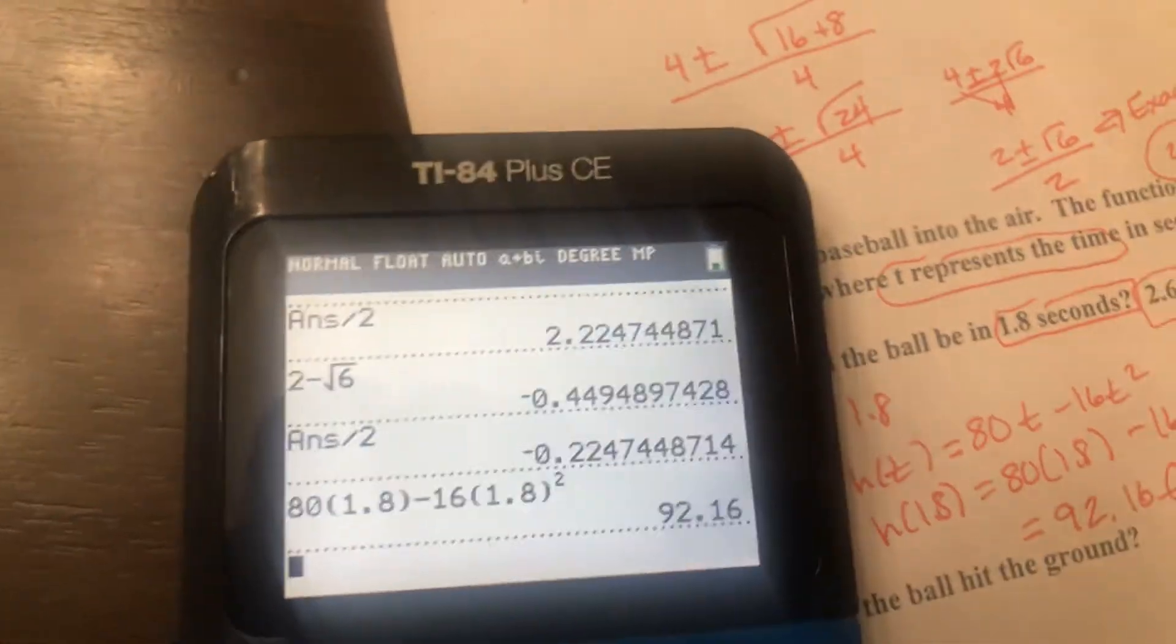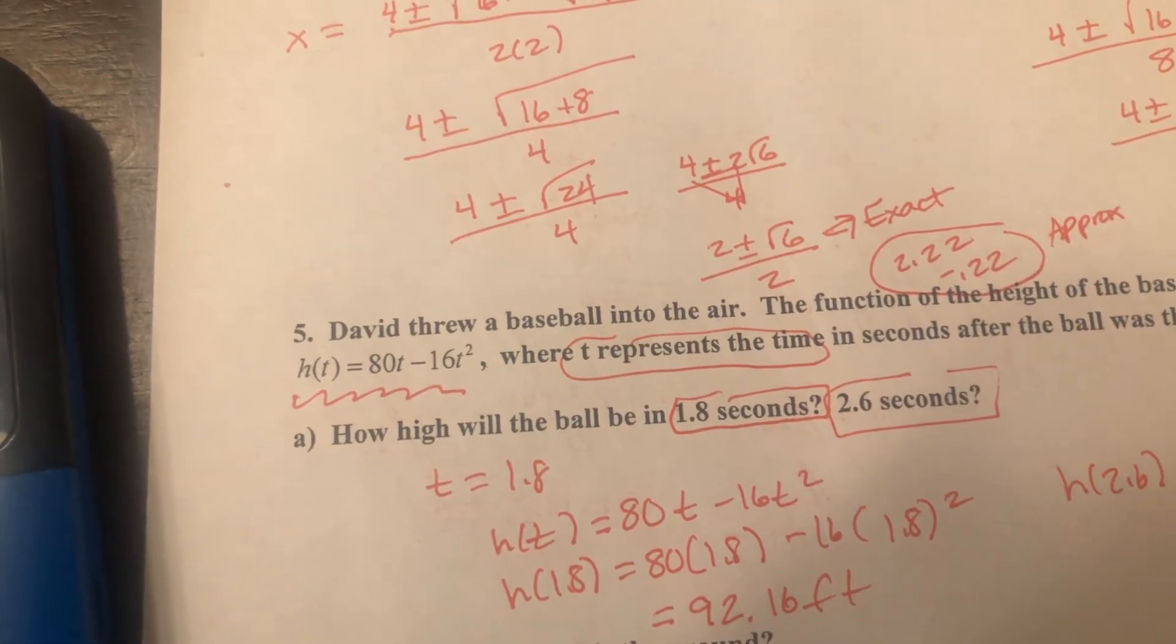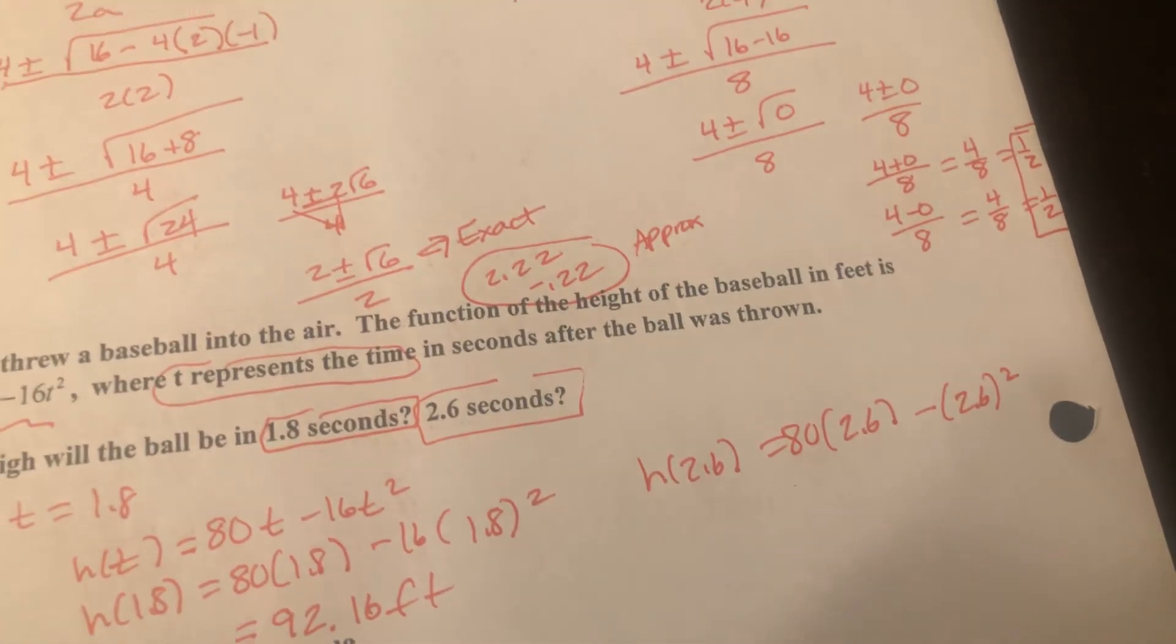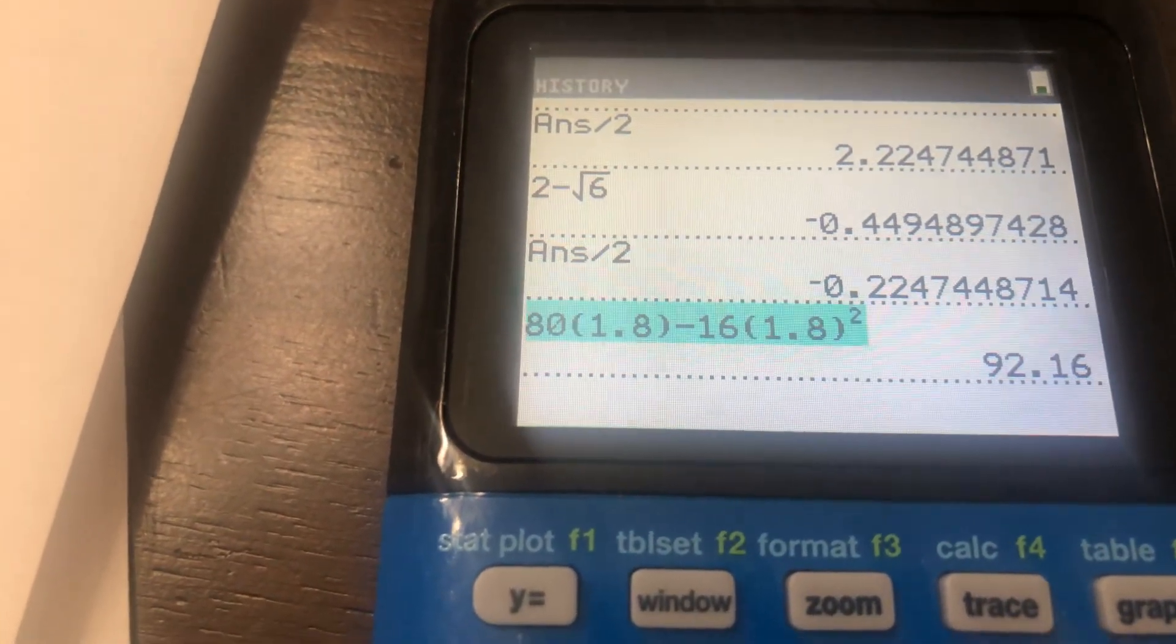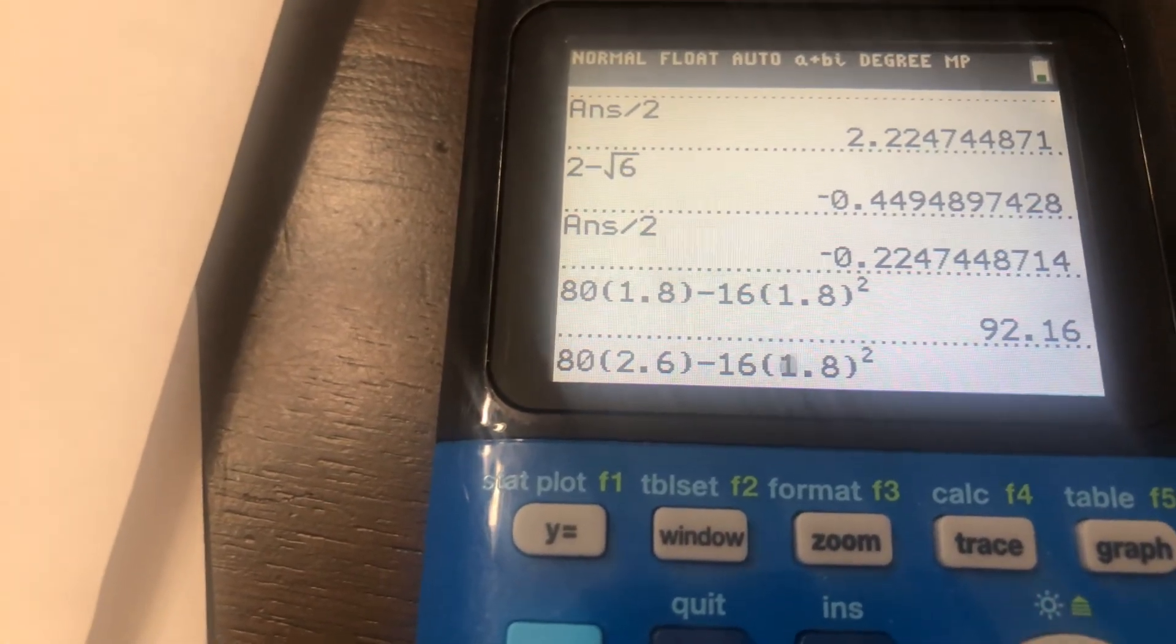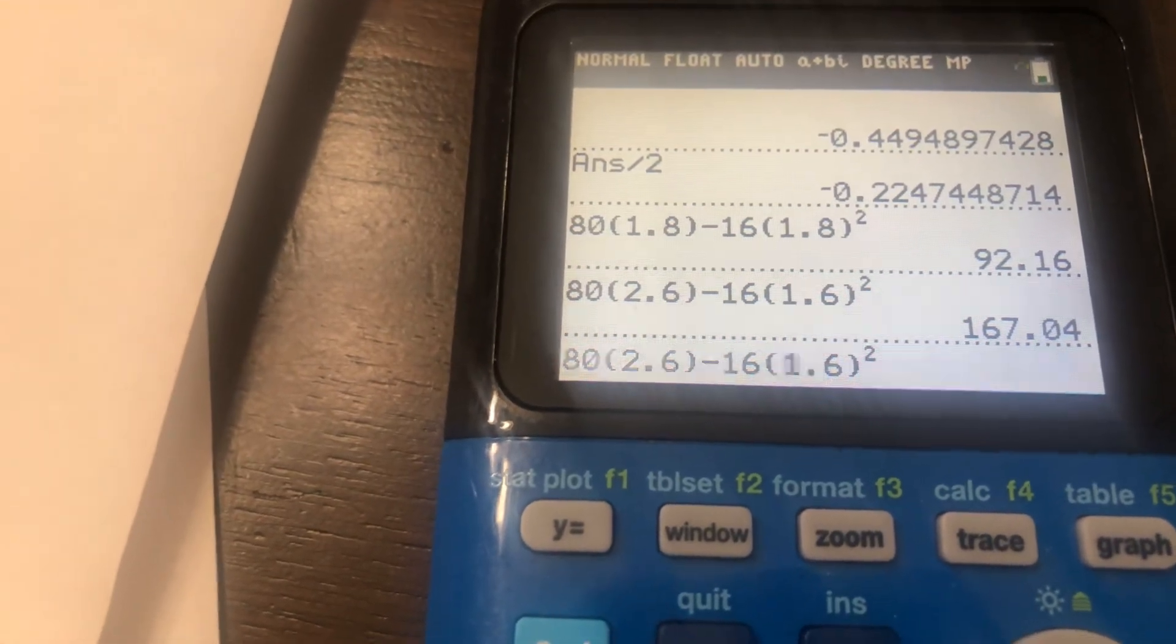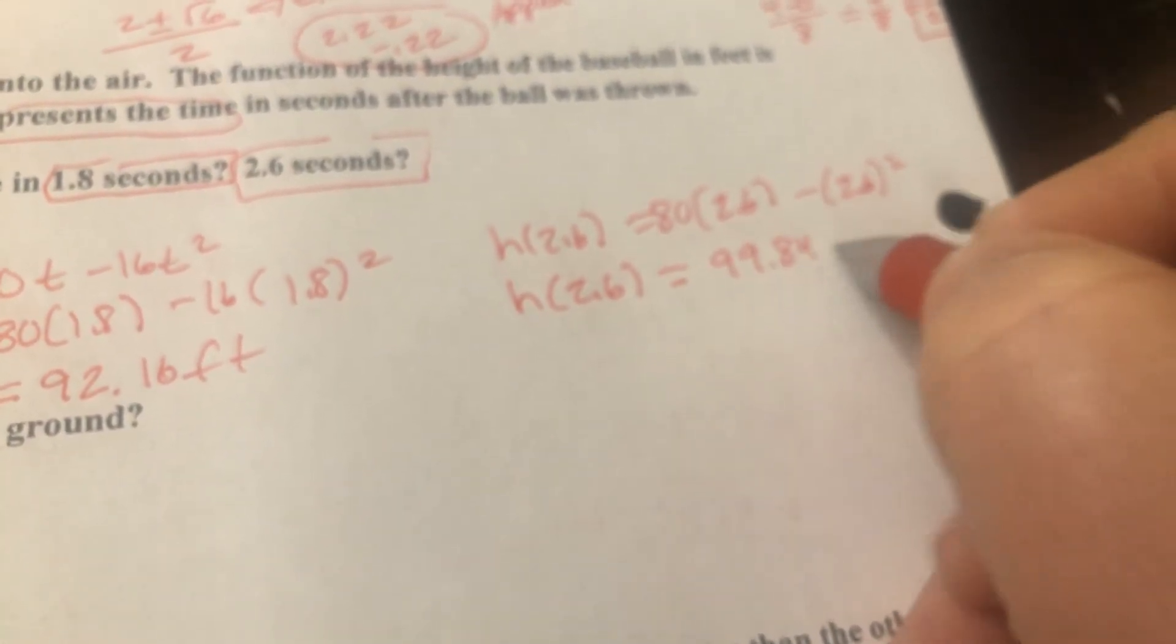Now they said 2.6 seconds. So now we're just going to plug 2.6 in. So it's going to be 80 times 2.6 minus 2.6 squared. So you could certainly just retype that all in your calculator. But I will show you a little trick that's going to be handy this quarter. You can up arrow, hit enter, and then just go and change the 1.8s to 2.6s. And so I get 99.84. So, sorry, my finger's in the way. H(2.6) is 99.84 feet.